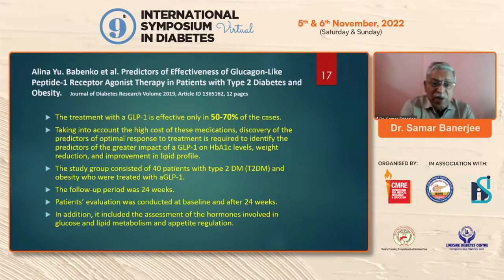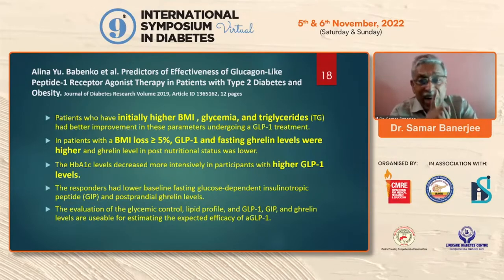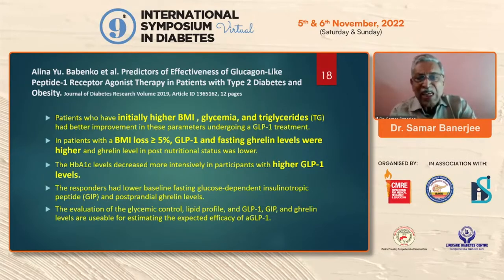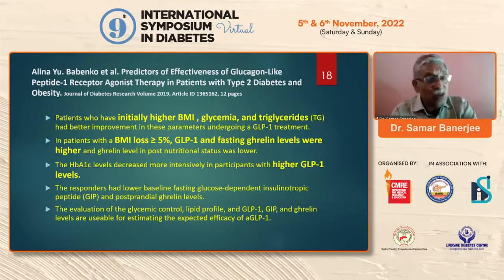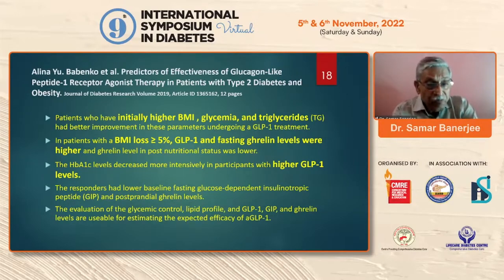GLP-1 receptor agonist treatment is effective only in 50 to 70% of cases — 30% do not respond. Taking into account the high cost, discovery of predictors of optimal response is required. The receiver operating curve analysis showed that the mean preprandial blood glucose level had the highest area under the curve for prediction of non-responders. In a study group of 40% of type 2 patients with obesity followed for 24 weeks, patients who initially had higher BMI, higher glycemia, and higher triglycerides had better response to GLP-1 therapy.